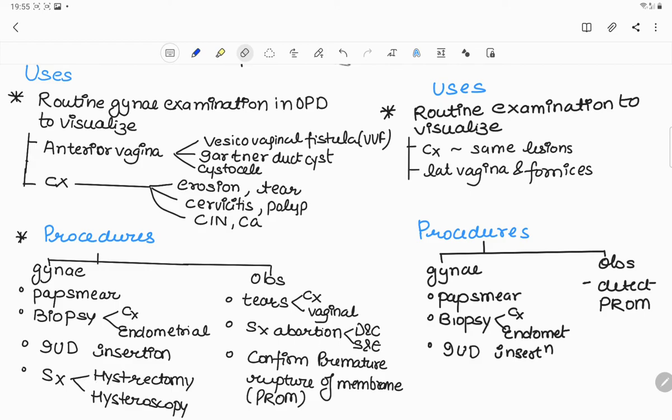Obstetrical uses are to explore and repair cervical and vaginal tears during surgical abortion like D&C and suction and evacuation, and to confirm the premature rupture of membrane by seeing the liquor on the groove.